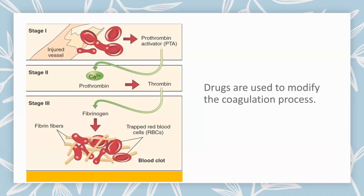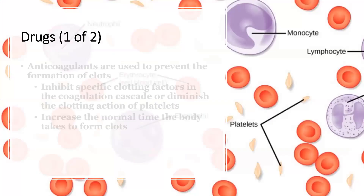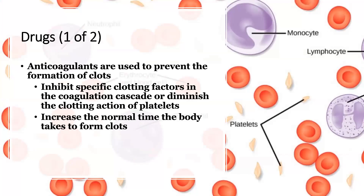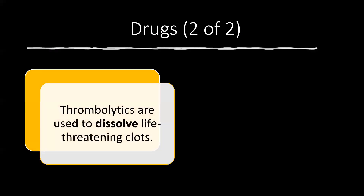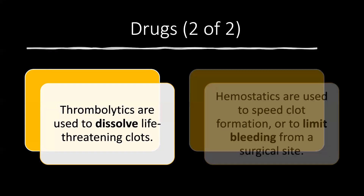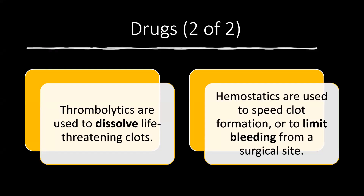Drugs used to modify the coagulation process include: anticoagulants, which prevent clot formation by inhibiting specific clotting factors or diminishing platelet clotting action, increasing normal clotting time; thrombolytics, used to dissolve life-threatening clots; and hemostatics, used to speed clot formation or limit bleeding from surgical sites.